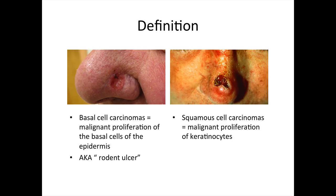Basal cell carcinomas, also known as Rodent ulcers, are defined as malignant proliferation of the basal cells of the epidermis, while squamous cell carcinomas are malignant proliferation of keratinocytes.